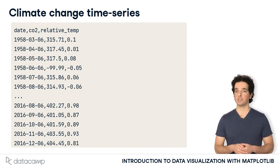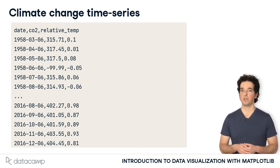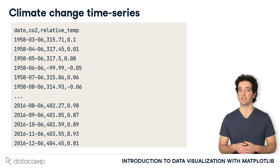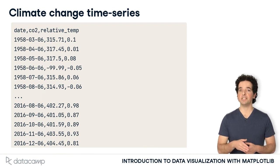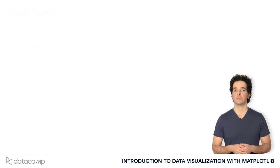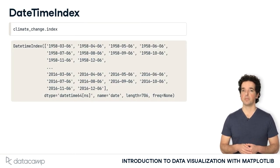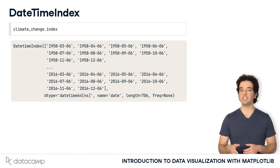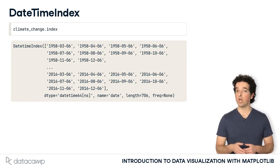If we want pandas to recognize that this is a time series, we'll need to tell it to parse the date column as a date. To use the full power of pandas indexing facilities, we'll also designate the date column as our index by using the index_col keyword argument. This is the index of our data frame — it's a DatetimeIndex object with 706 entries, one for each measurement, with a datetime data type, and Matplotlib will recognize that this is a variable that represents time.